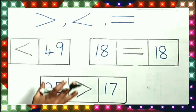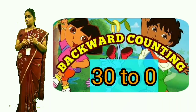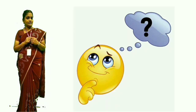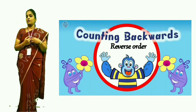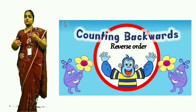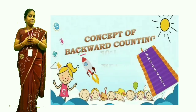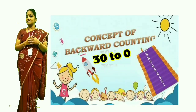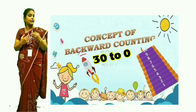Now you all know how to do comparison. Next, I am going to teach you backward counting 30 to 0. What is backward counting? Backward counting means reverse order — decreasing the numbers. Like 30, 29, 28, 27 — like that, we are going to decrease the numbers.